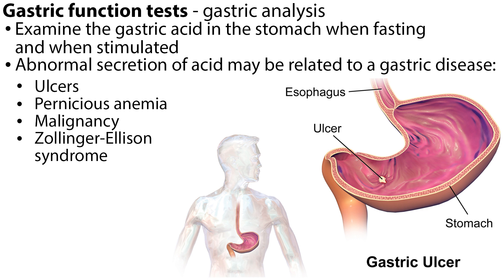Gastric function tests, such as gastric analysis, examine the gastric acid in the stomach when fasting and when stimulated. Abnormal secretion of acid may be related to a gastric disease, such as ulcers, pernicious anemia, malignancy, or Zollinger-Ellison syndrome. This concludes our tutorial on GI diagnostic procedures. I hope this overview of lab tests, imaging, and endoscopic procedures will help you in your study for the NCLEX. Be sure to check out our other videos. Thank you.